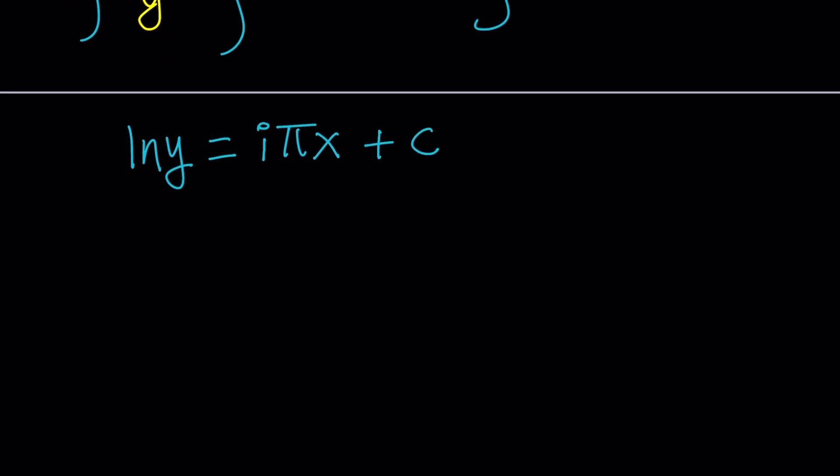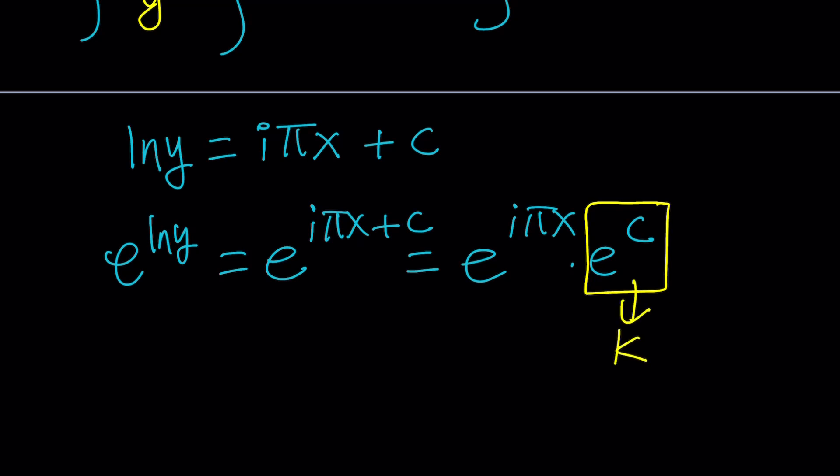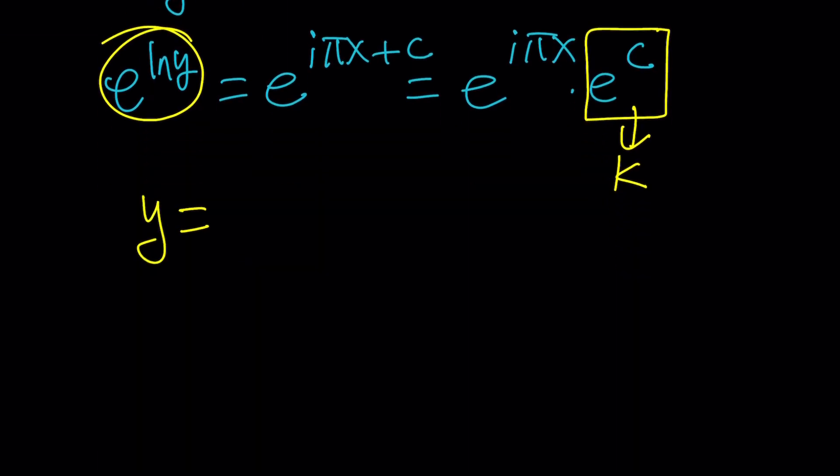Let's do e to the power both sides. That gives us something like this. And as you know, this can be separated. And e^c is a constant because c is a constant. So I can call that k. And now e^(ln y) is just going to be y. And from here, we're going to get y = ke^(iπx). Actually, if you use an r instead of k, that would be a little bit more meaningful. Let's use r. And r will represent what? The modulus or the absolute value of our complex number.